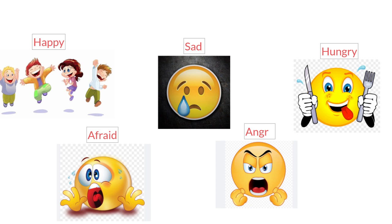Here are some ways to express our feelings and emotions. Let's take a look at the first picture. What do you see here? These are kids that are happy. How do they express that they are happy? Look at their faces — they are smiling, they are laughing. So, when you are happy, what do you do? You smile or you laugh. This is the way we express ourselves when we feel happy.